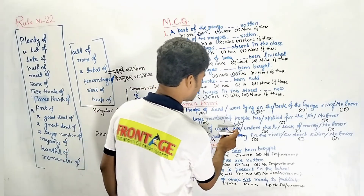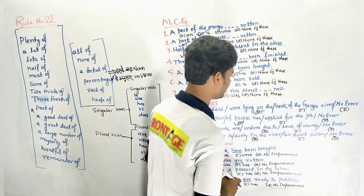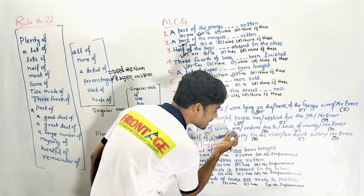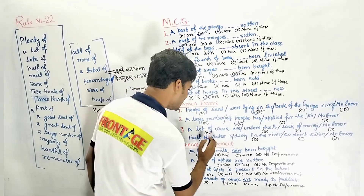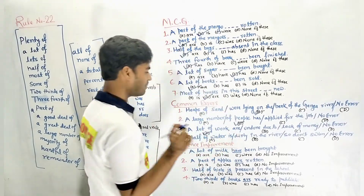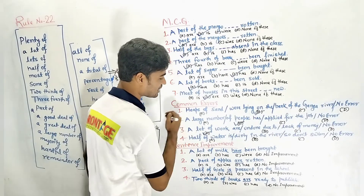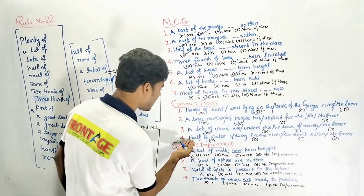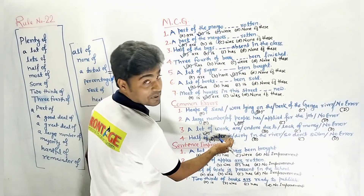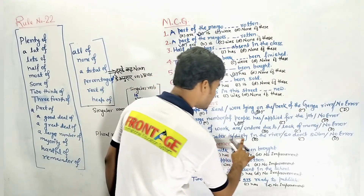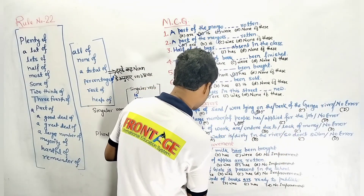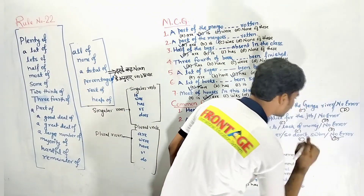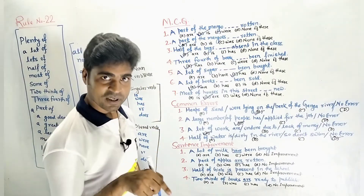'A lot of work are undone due to lack of money.' Here, work is singular/uncountable, so 'is' should be used instead of 'are' — error is in part A. Next: 'Half of water is dirty in the river, so don't swim.' Water is uncountable, singular verb 'is' is correct — there is no error in this sentence, so the answer is option D: no error.